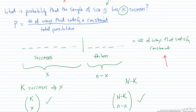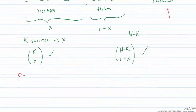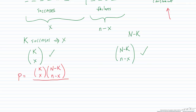Probability is the total number of ways to satisfy the constraint divided by the total number of possibilities. The numerator is K choose x times (N minus K) choose (n minus x). The denominator is the total number of ways to take N items and put them into n spots, which is N choose n. This is the probability function for the hypergeometric distribution.